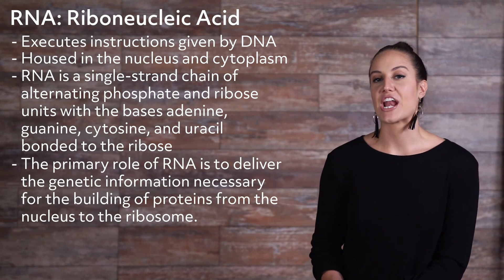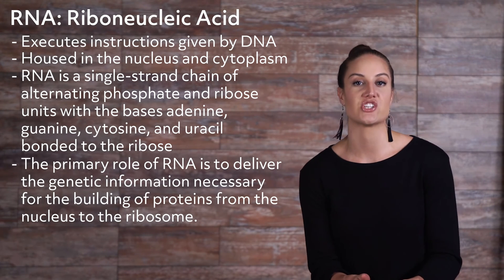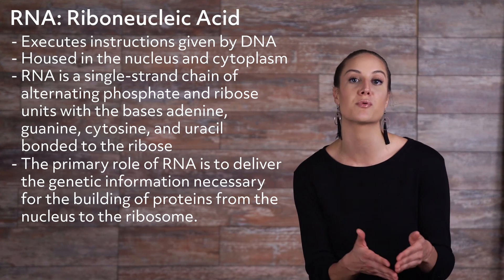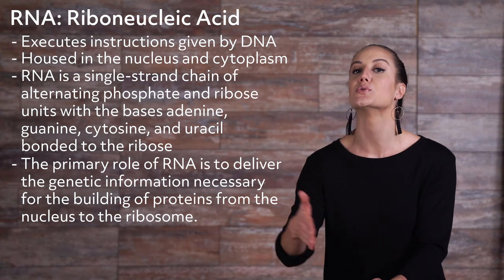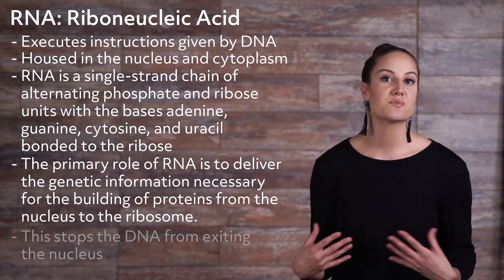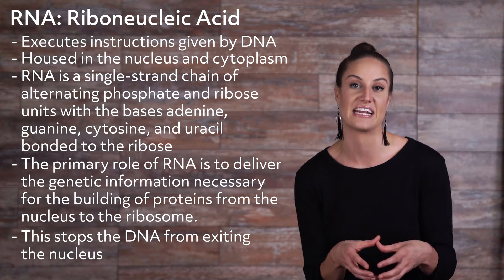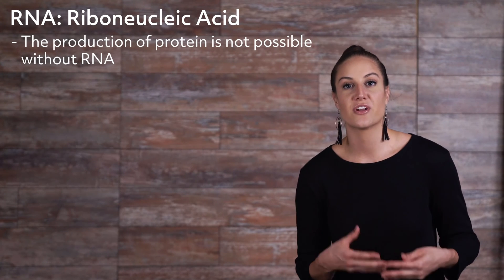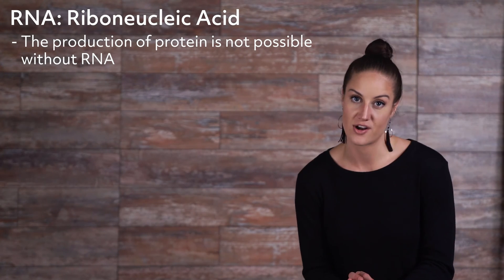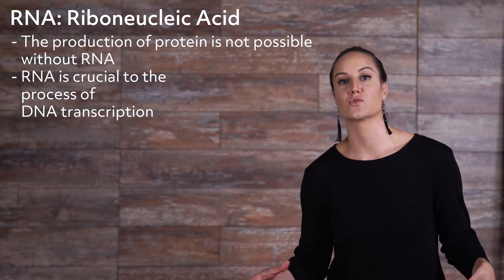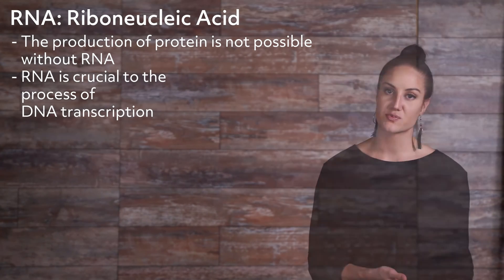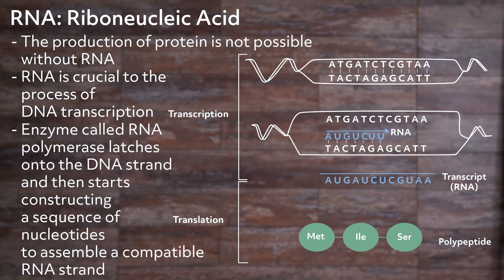The primary role of RNA is to deliver the genetic information, or code, necessary for the building of proteins from the nucleus to the ribosome. This procedure stops the DNA from exiting the nucleus for the purpose of protecting the DNA. The production of protein is not possible without RNA. RNA is also crucial to the process of DNA transcription. An enzyme called RNA polymerase latches onto the DNA strand, then starts constructing a sequence of nucleotides to assemble a compatible RNA strand.